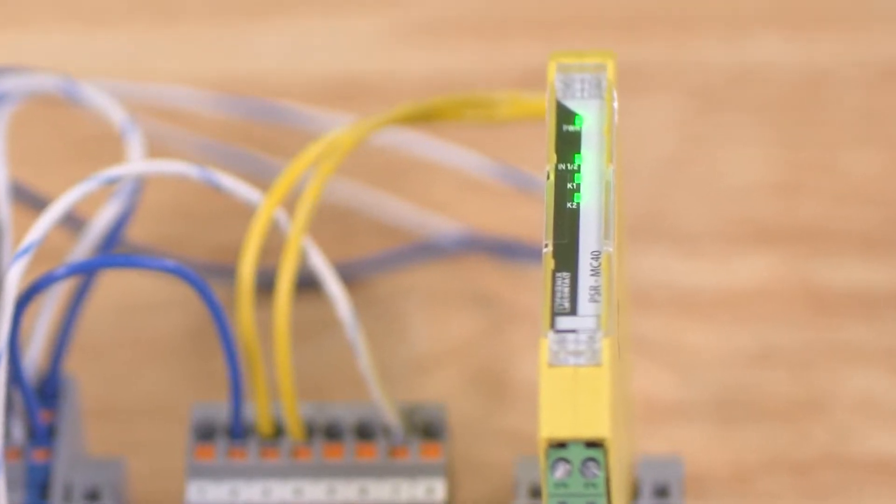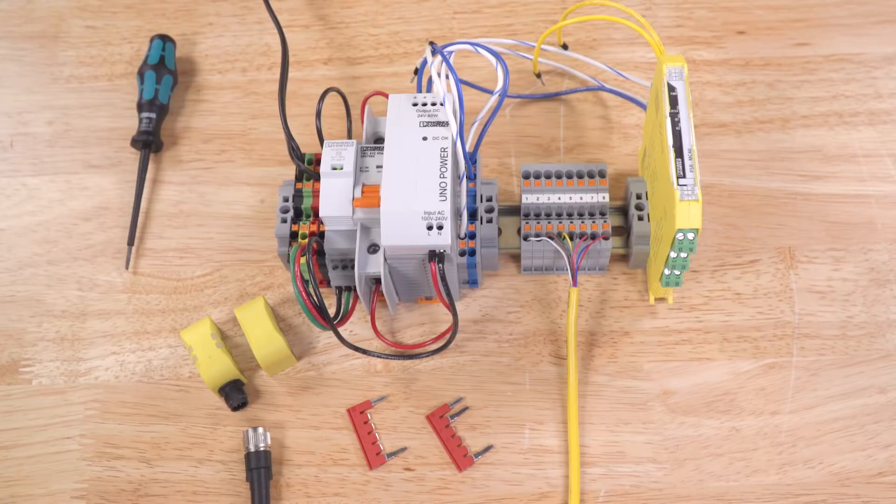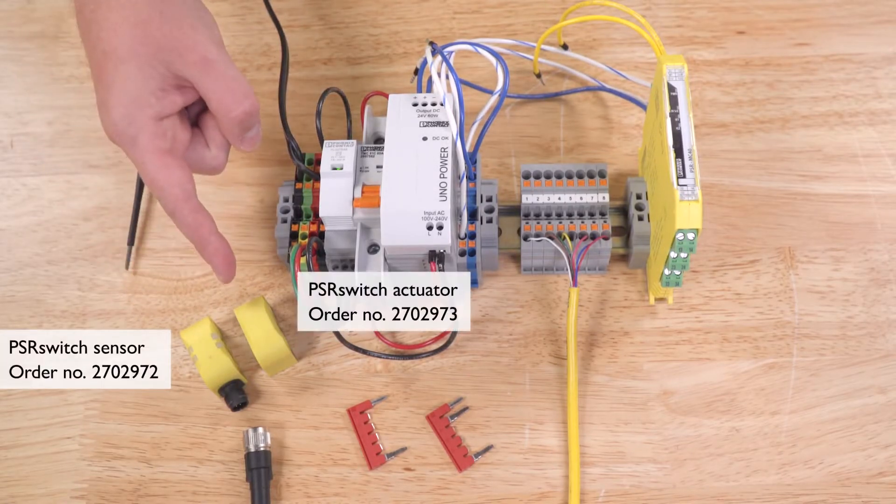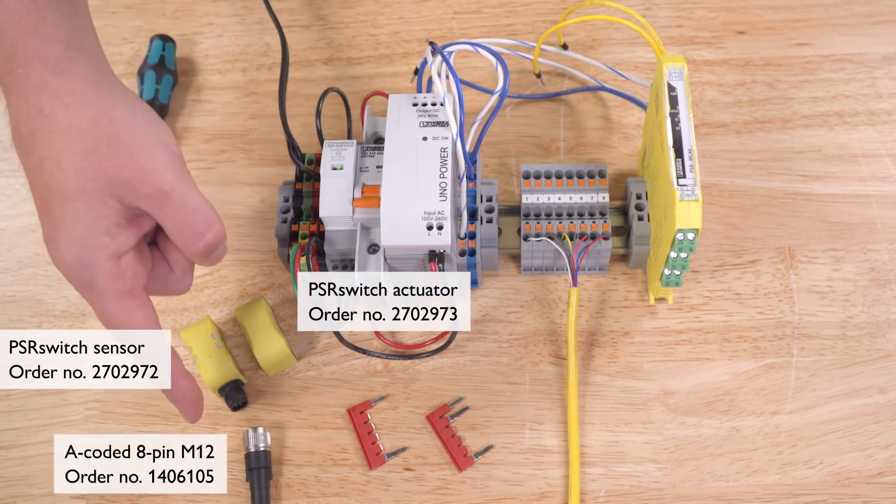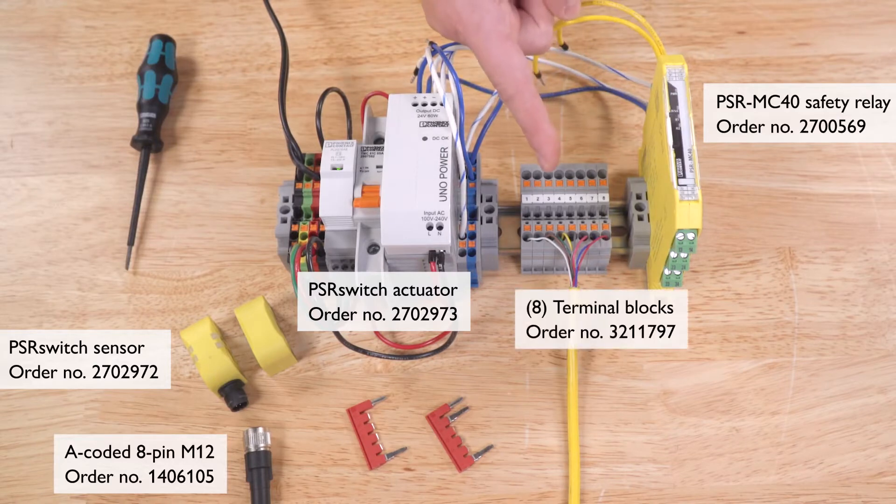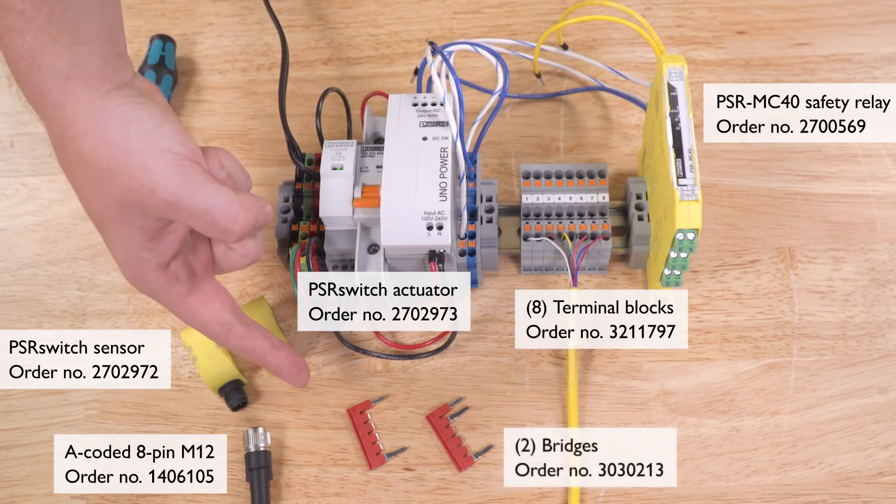Let's review all the parts we're going to use. We'll be using a PSR switch Unicode sensor, a PSR switch actuator, an A-coded 8-pin M12 cable, one PSR MC40 safety relay, eight terminal blocks, and two bridges.